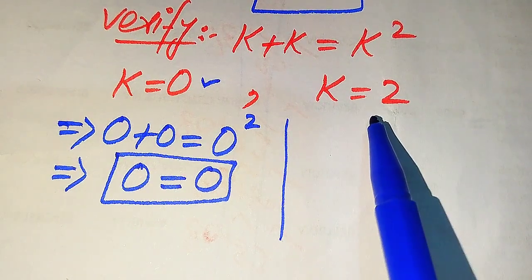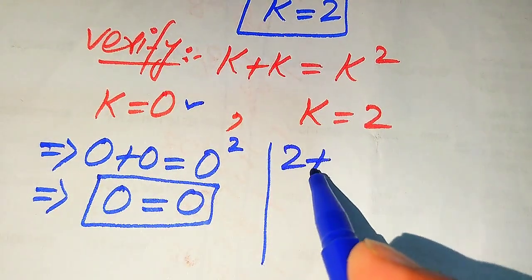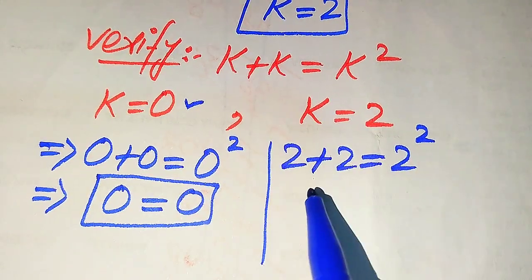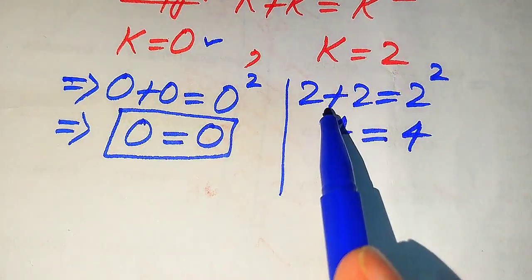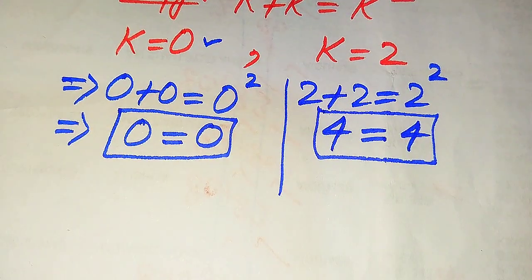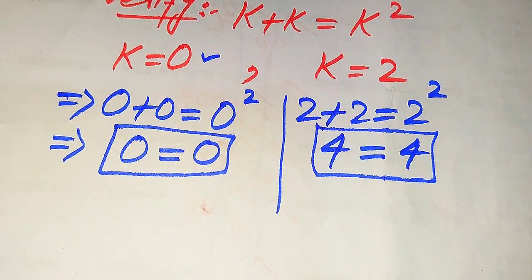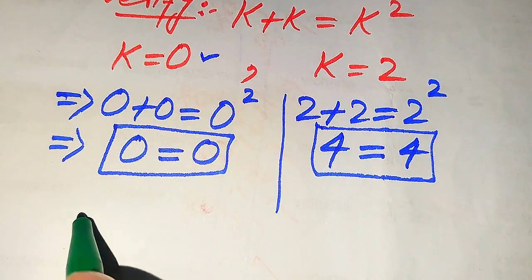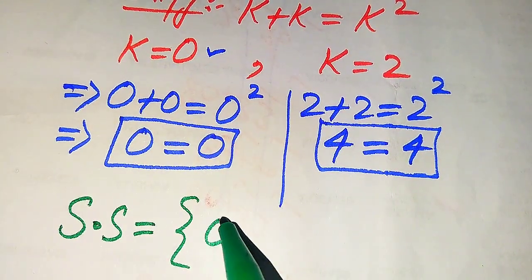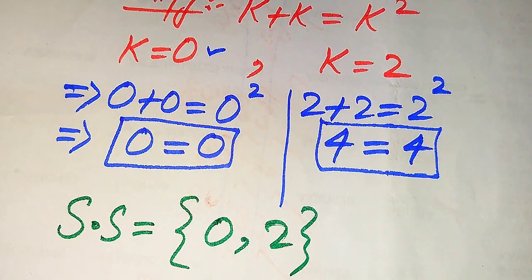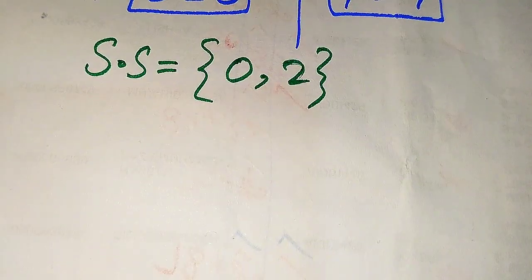Now we check K equals 2. Substituting into the equation gives 2 plus 2 equals 2 squared, which is 4 equals 4. Both sides are equal, so K equals 2 also satisfies the equation. Therefore, both values are valid solutions and the solution set from Method 1 is {0, 2}.